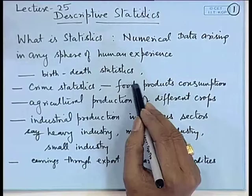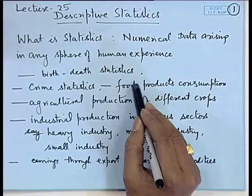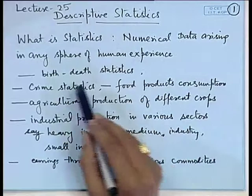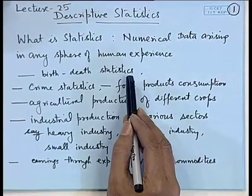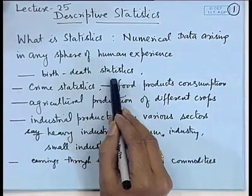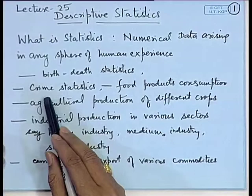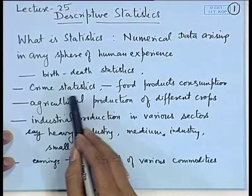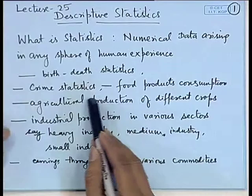In our day to day life, I will try to show through the following examples that everywhere we are making use of statistics. For example, the records of birth and death are kept in every municipality, village, or town office. This data represents birth and death statistics. Every state, town, or police station keeps the record of crime statistics — that is, the number of crimes committed under various categories during a given period.